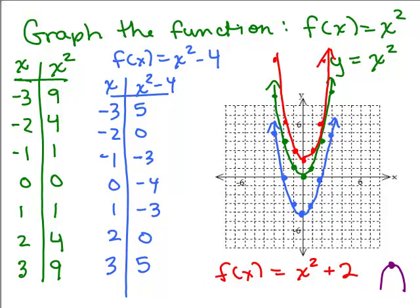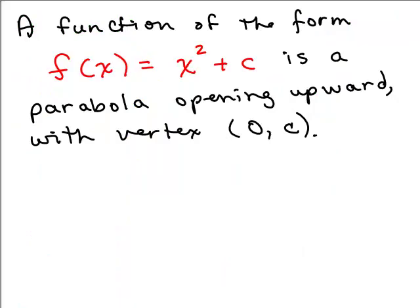These are what I call the basics of what a parabola might look like. And I'm going to call this first one we did, f of x equals x squared, my kind of average-looking parabola. I just memorized these seven ordered pairs, or I could quickly figure those out again. You're just squaring the number. Pretty simple. A function of the form f of x equals x squared plus c is a parabola opening upward with vertex 0, c.